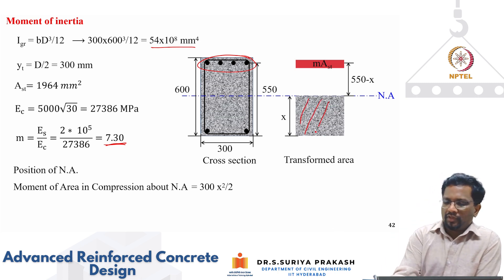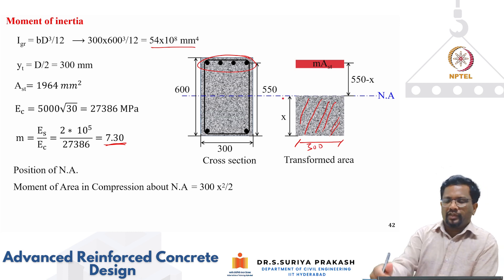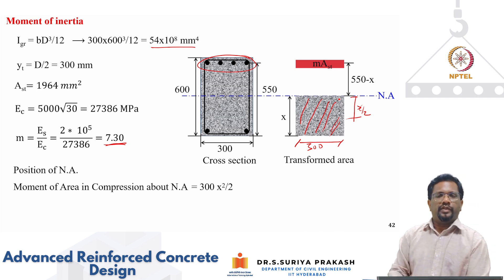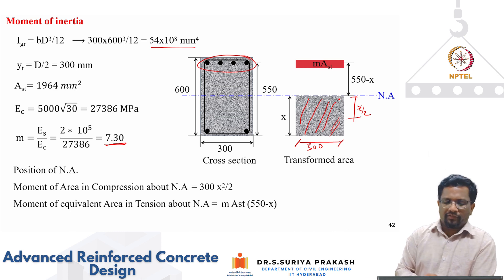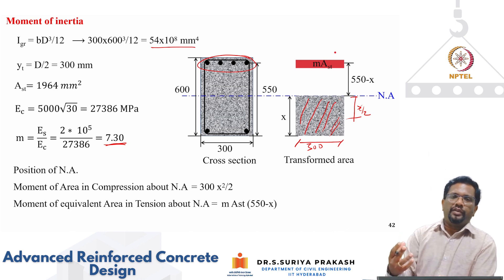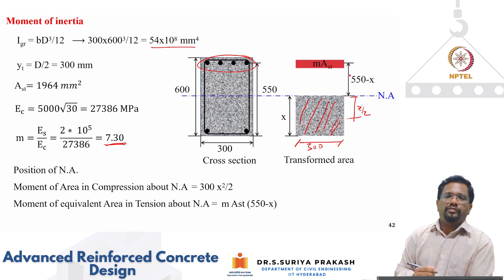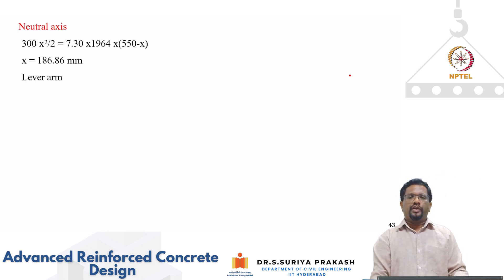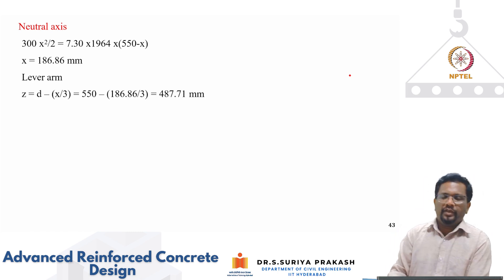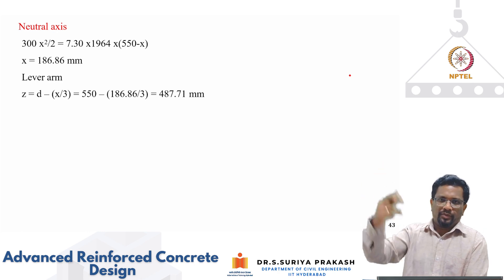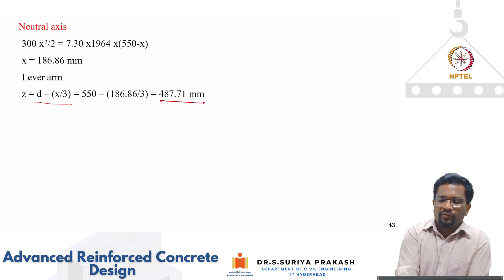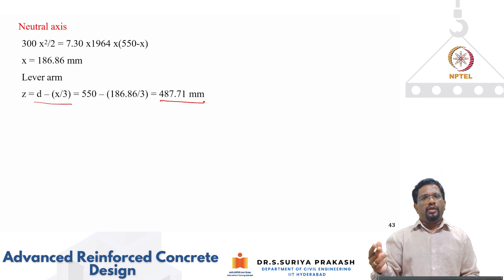To find the neutral axis depth, we equate the moment of the concrete compression area and the equivalent steel area about the neutral axis. For a neutral axis depth x: 300×x²/2 = m×AST×(550 − x). Solving gives x = 186.86 mm. The lever arm z = D − x/3 = 550 − 186.86/3 = 487.7 mm. All these parameters will be used in the deflection calculations.